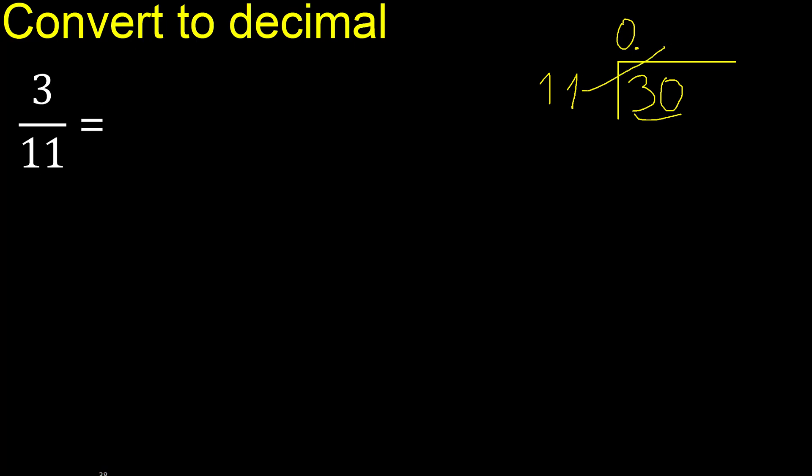11 multiplied by which number is nearest to 30 but not greater? 11 multiplied by 4 is 44, is greater. Multiplied by 3, 33 is greater. Multiplied by 2, 22, ok, is not greater. 30 minus 22 is 8.